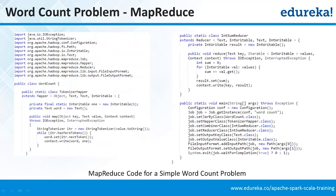Let's look at a quick code comparison. Please have a look at this slide — how many lines of code are written here? This is the WordCount program, the Hello World of Hadoop MapReduce. Approximately 40 to 50 lines of code have been implemented here for Hadoop's MapReduce. The same functionality can be implemented in Spark — let's see how many lines in the next slide.